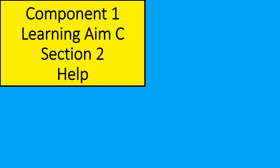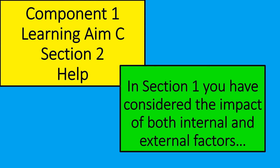This is Component 1, Learning Aim C. Section 2 is your help. You will have already, in your Section 1, considered the impact of both the internal and external factors, looking at your unemployment and your weather and how the business organises itself. So, this is Section 2.